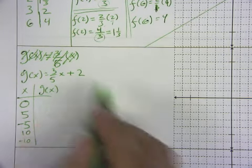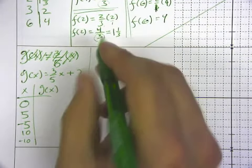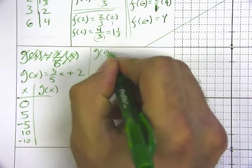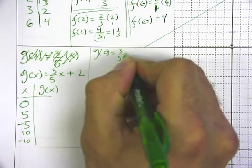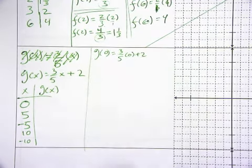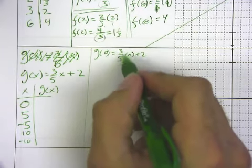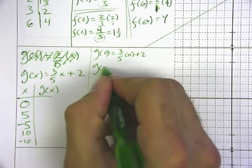So now it's just a matter then of finding my g(x) values. So g of 0 would just be 3/5 times 0 plus 2. Hopefully you could see what was going to happen here. 3/5 times 0 is 0. We just have 2.